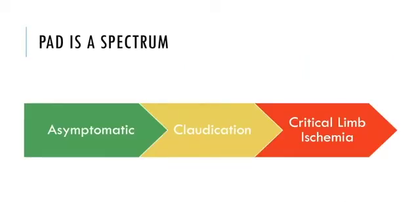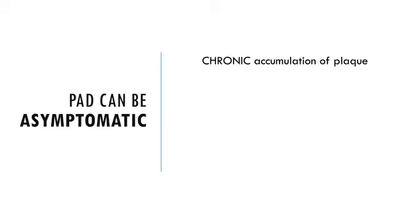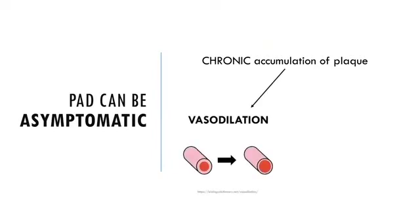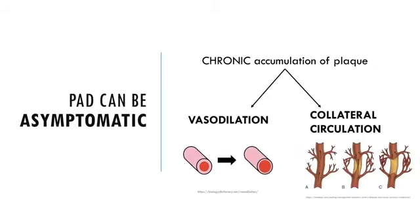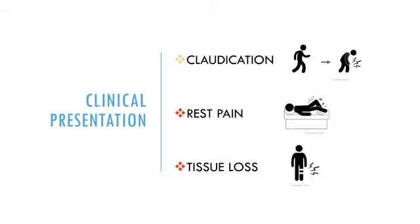PAD is a spectrum of disease ranging from asymptomatic to severe limb ischemia. Patients with PAD may be asymptomatic despite significant disease because this occurs gradually, allowing time for nearby arteries to dilate and accommodate more flow, and collateral circulation to develop, providing blood supply through alternative routes. Patients with PAD can present with claudication or rest pain and tissue loss, which is considered critical limb ischemia.